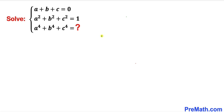Welcome to pre-math. In this video we have a system of equations: a plus b plus c equals zero, a squared plus b squared plus c squared equals one. We are going to find the value of a to the power four plus b to the power four plus c to the power four.